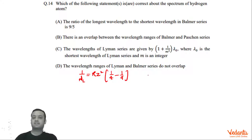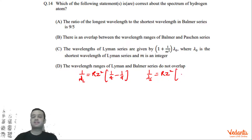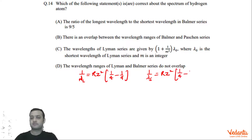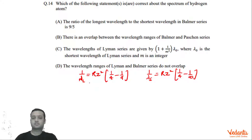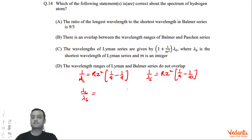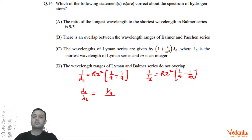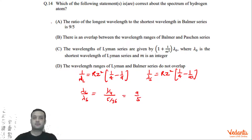For the shortest wavelength in Balmer, the transition goes from infinity to n = 2, giving 1/λ_shortest = R·Z² × (1/4 − 1/∞). Taking the ratio λ_longest / λ_shortest, R·Z² cancels out and we get (1/4) divided by (5/36), which simplifies to 9:5. Hence Option A is correct.